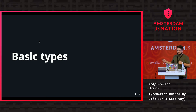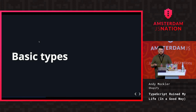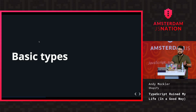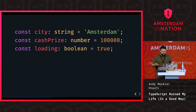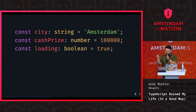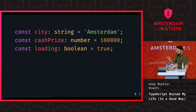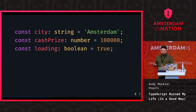I'm going to cruise through the syntax pretty quickly to give you a little taste. I really recommend the TypeScript docs — they're easy to understand and there are great getting started guides. Here's the hello world of types. I have three simple identifiers: city is a constant with a string type annotation, cashPrize is a number, and loading is a boolean. Anytime you see a colon followed by an identifier, that's a type annotation. Now I have types in my JavaScript — it's pretty simple.